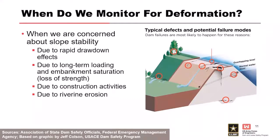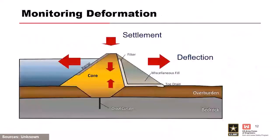We also monitor when concerned about differential settlement, which can lead to cracking of your embankment. For slope stability concerns — related to rapid drawdown, long-term loading, embankment saturation causing loss of strength, and construction activities — inclinometers or interferometry may be used. Settlement refers to vertical deformation; deflection refers to the horizontal elements of deformation.